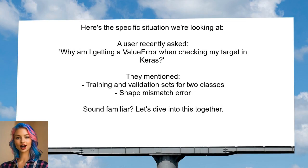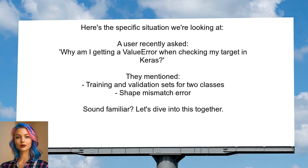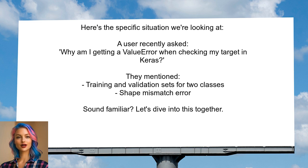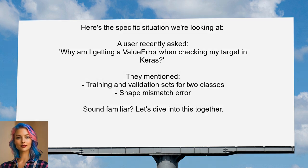Here's the specific situation we're looking at. A user recently asked: why am I getting a value error when checking my target in Keras? They mentioned that they have set up their training and validation sets for two classes, but they keep running into this shape mismatch error. Sound familiar? Let's dive into this together.